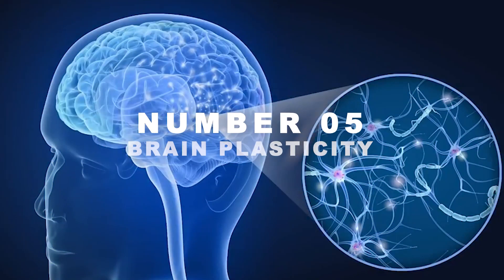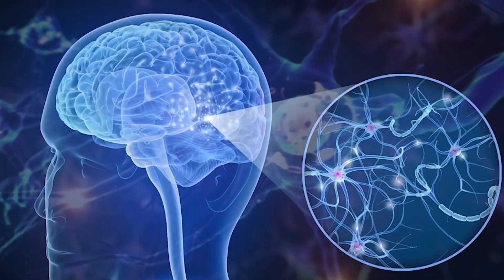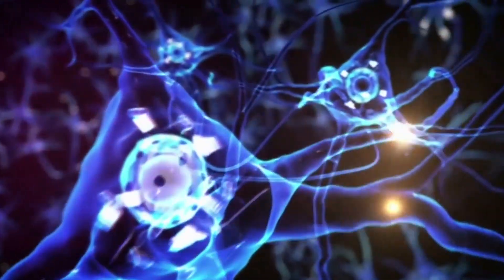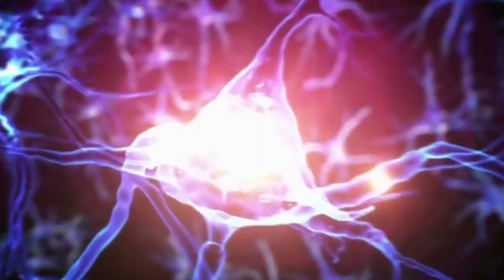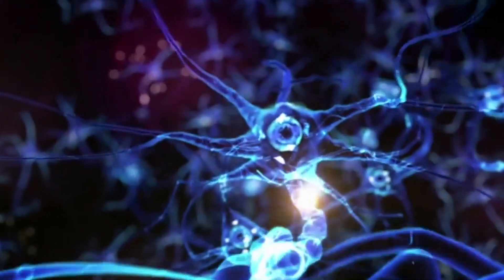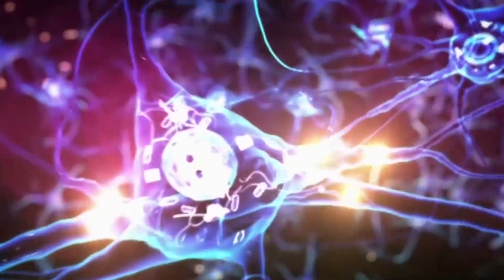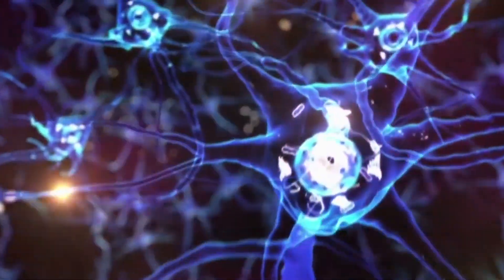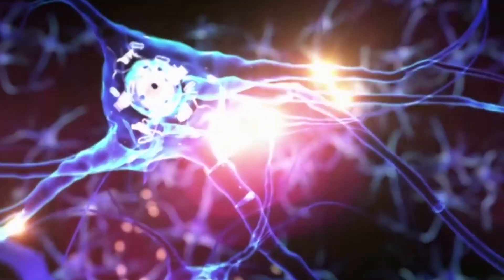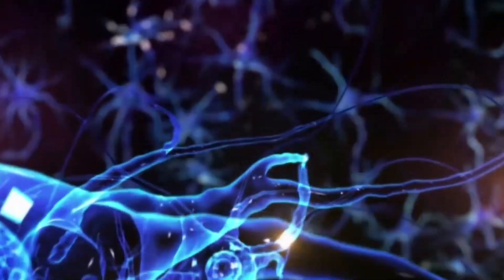Number 5. Brain Plasticity. The brain is a remarkably adaptive organ with an astonishing ability known as brain plasticity or neuroplasticity. This concept denotes the brain's capacity to reorganize itself by forming new neural connections and pathways throughout life. It means that the brain can learn, change, and adapt in response to experiences, challenges, and injuries.